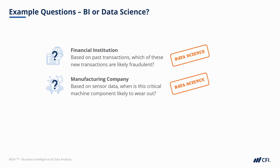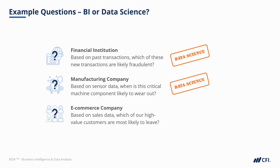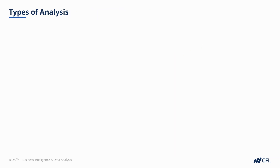Finally, an e-commerce company may ask: based on our sales data, which of our high-value customers are most likely to leave? In this case, the prediction is likely to help the company make strategic choices to protect long-term revenue. Again, these predictions are data science. In summary, data science is all about making predictions and estimations within uncertain or future scenarios, while business intelligence is backward-looking and descriptive, and data science is forward-looking or predictive.